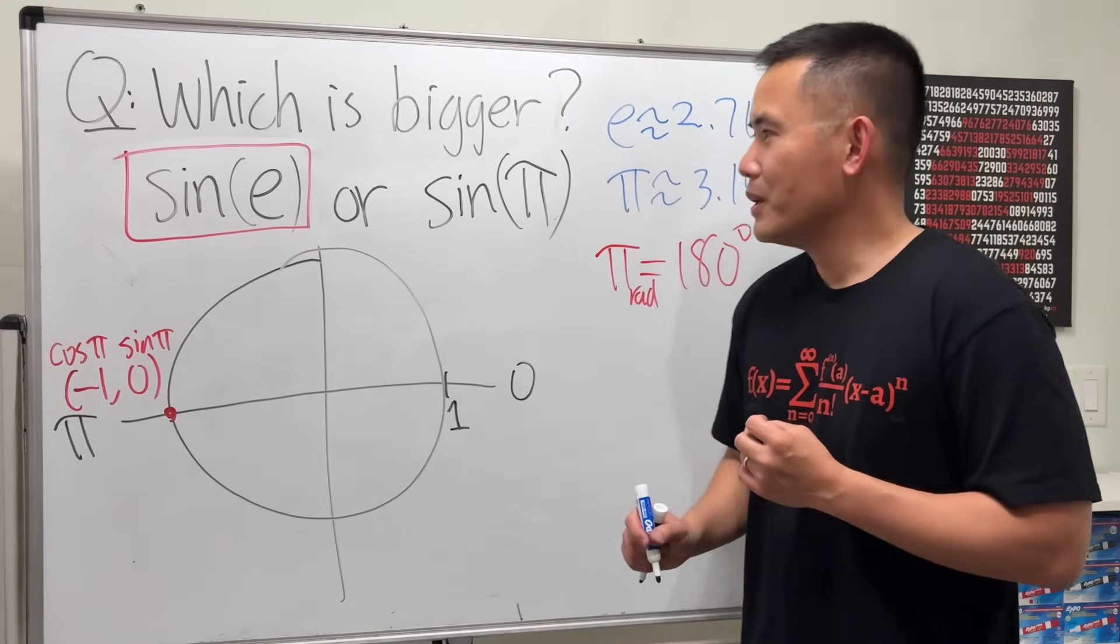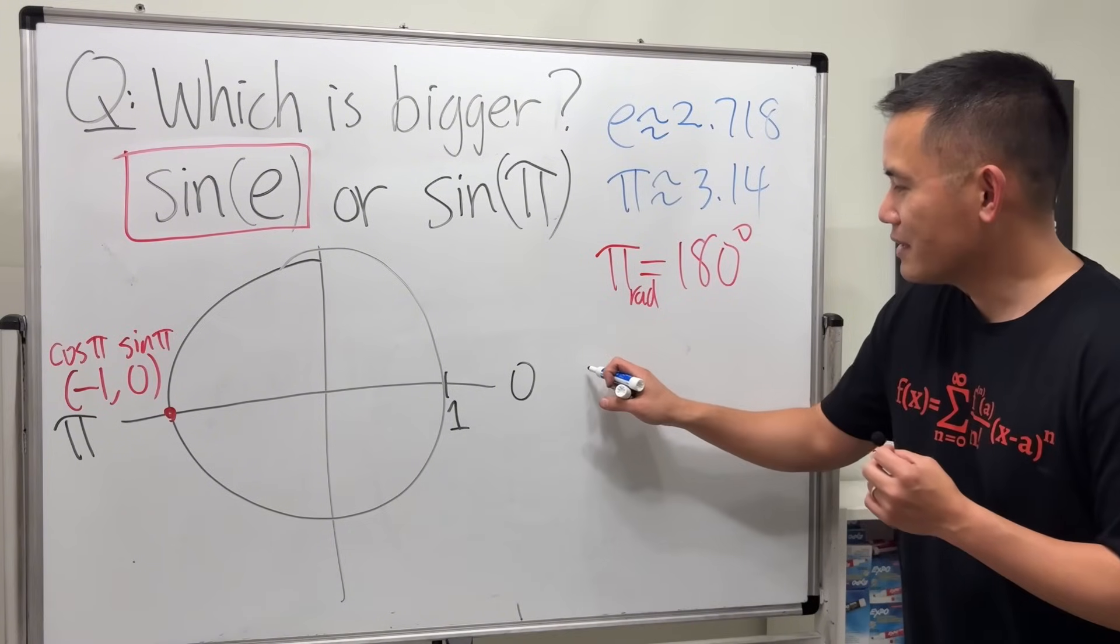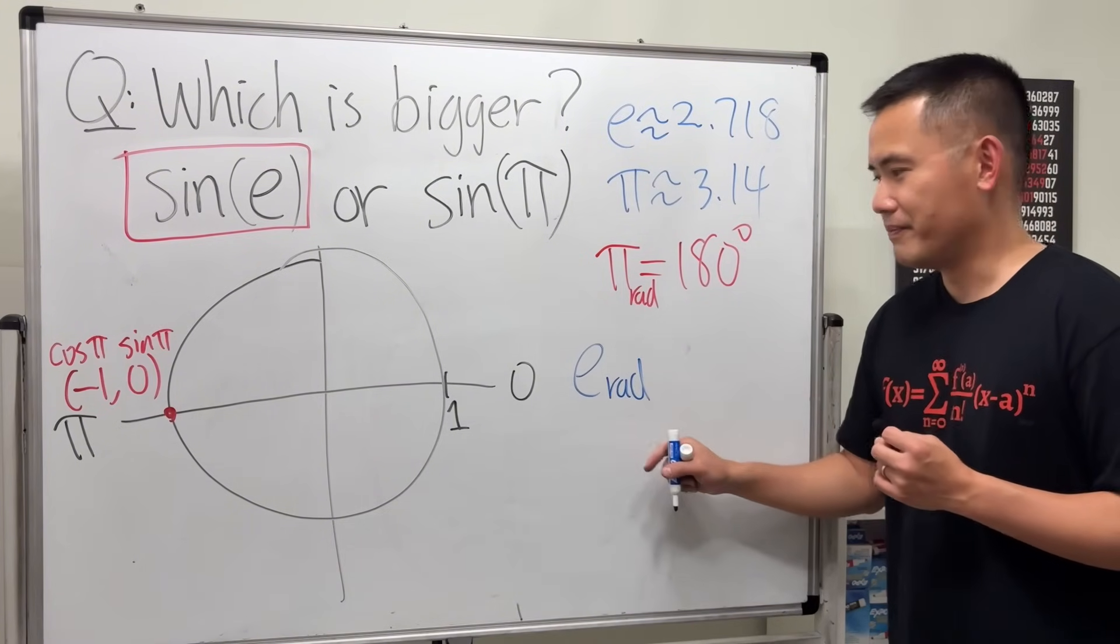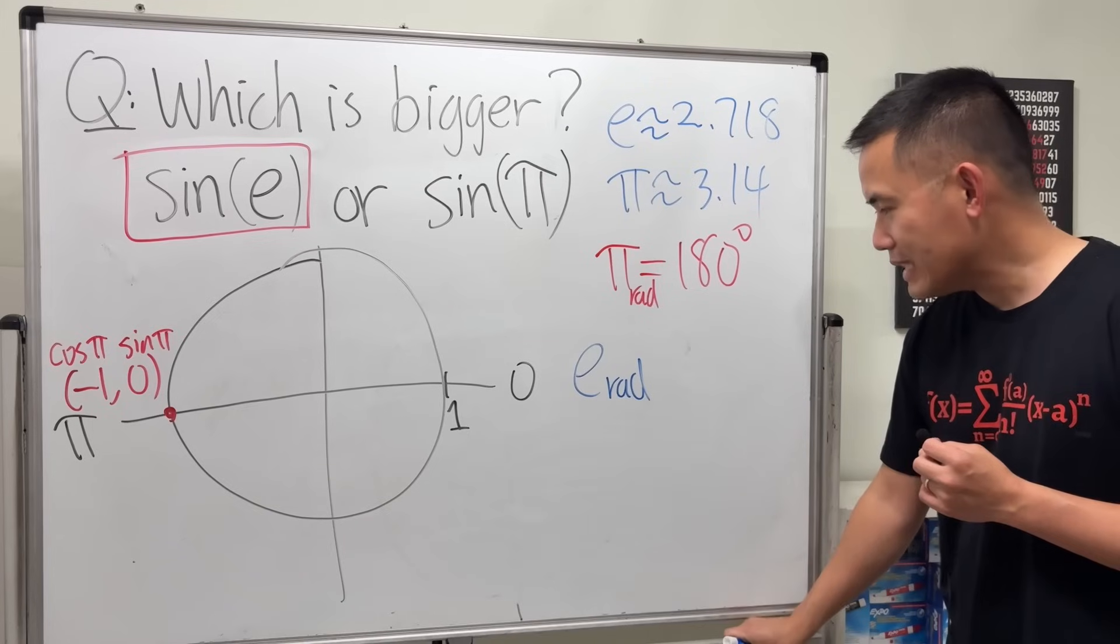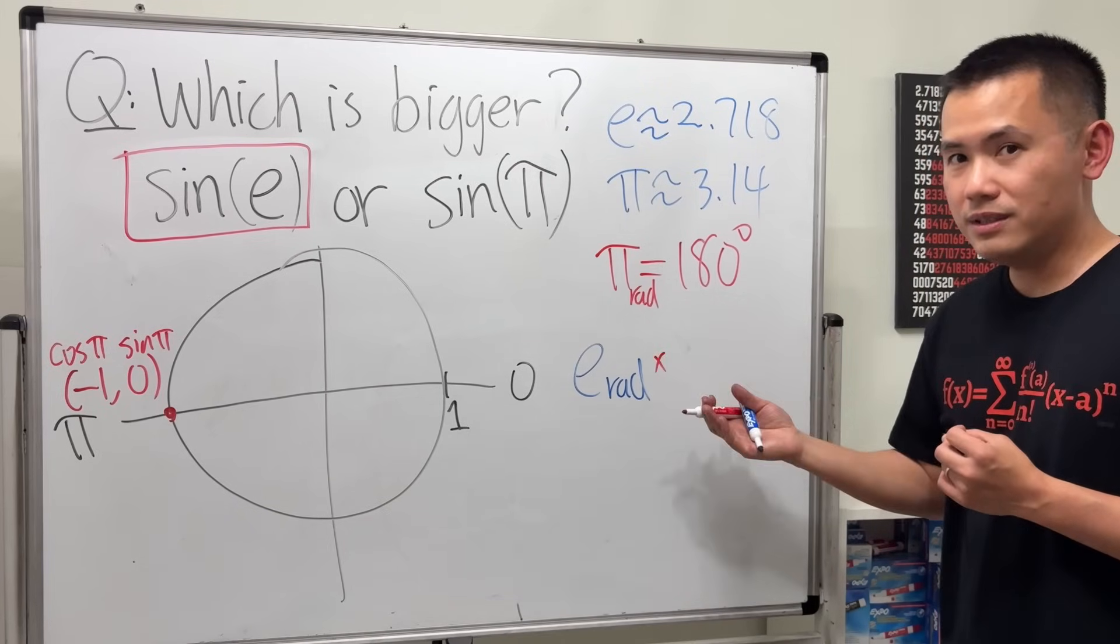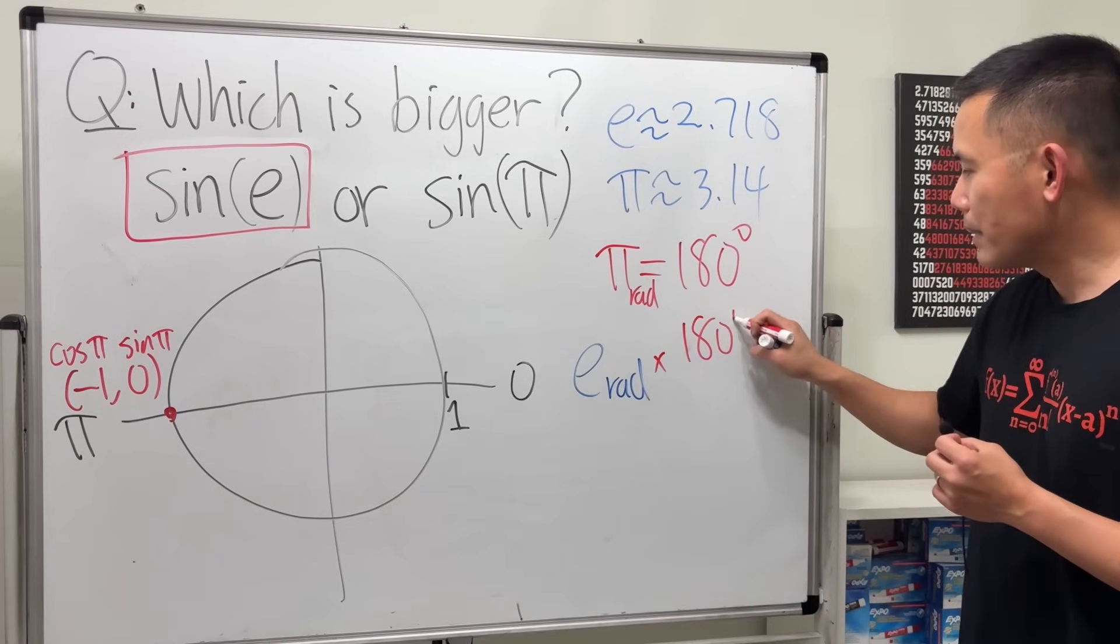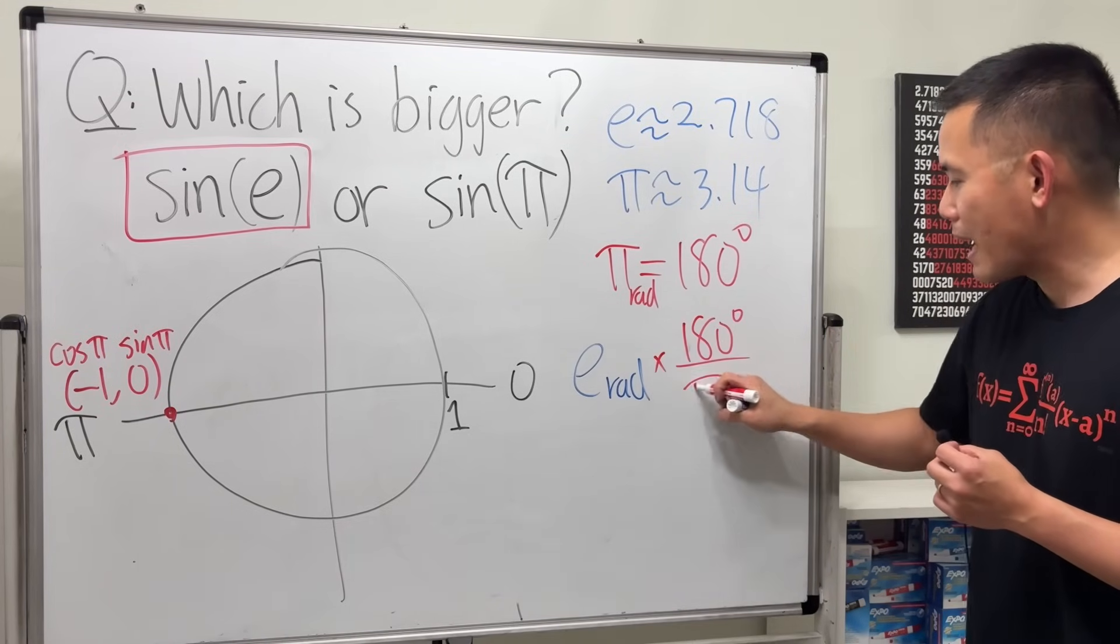Let's talk about the e radian. So how big is e rad? What we are going to do is we will just have to convert that into degrees. And to do so, because we know this, I will just multiply by 180 degrees over π rad.